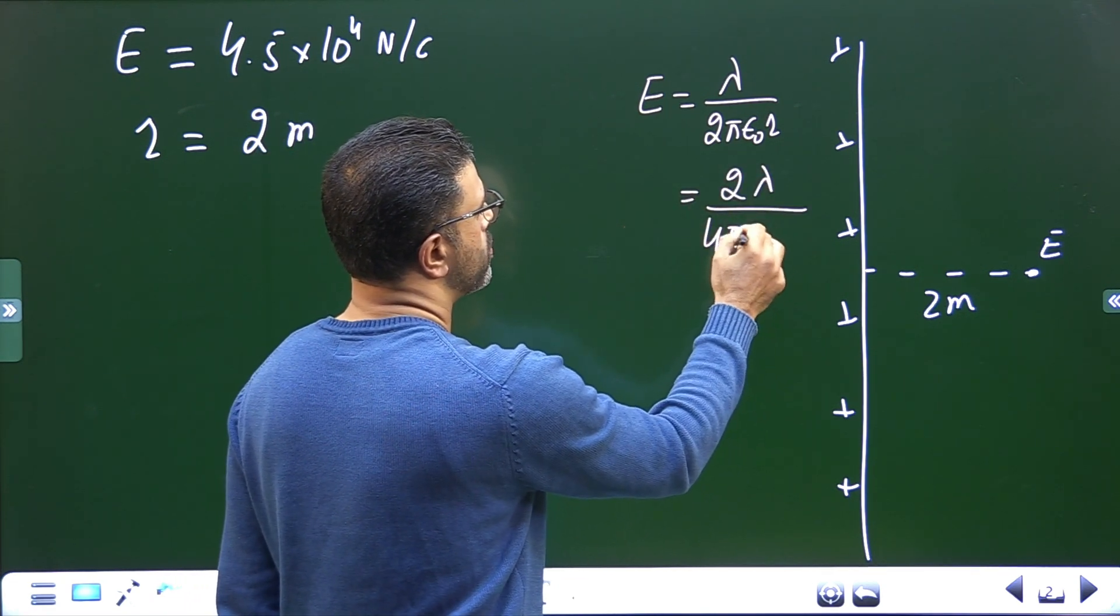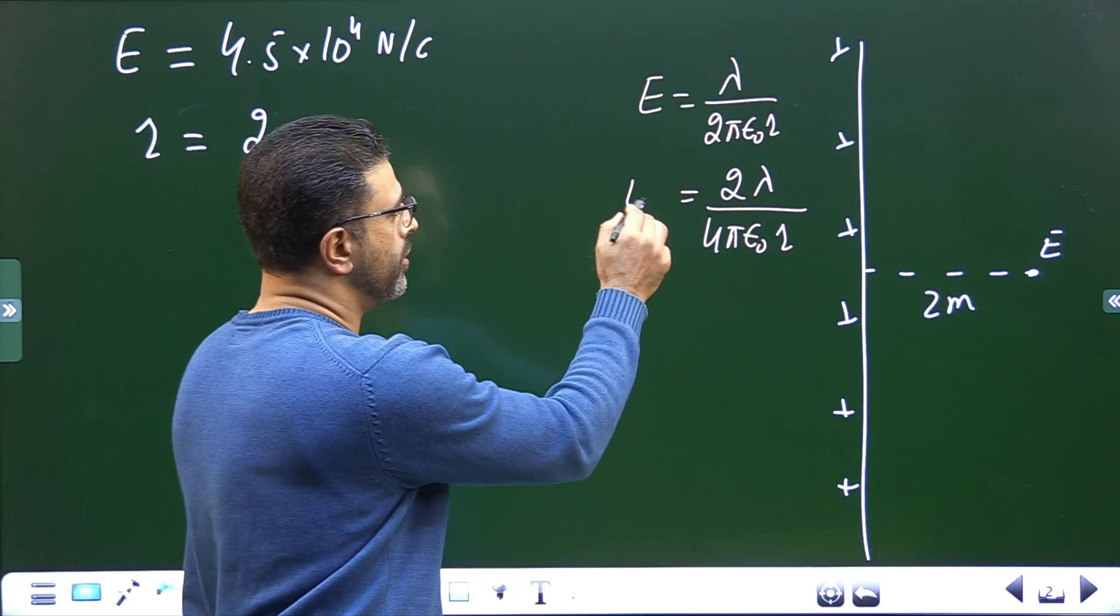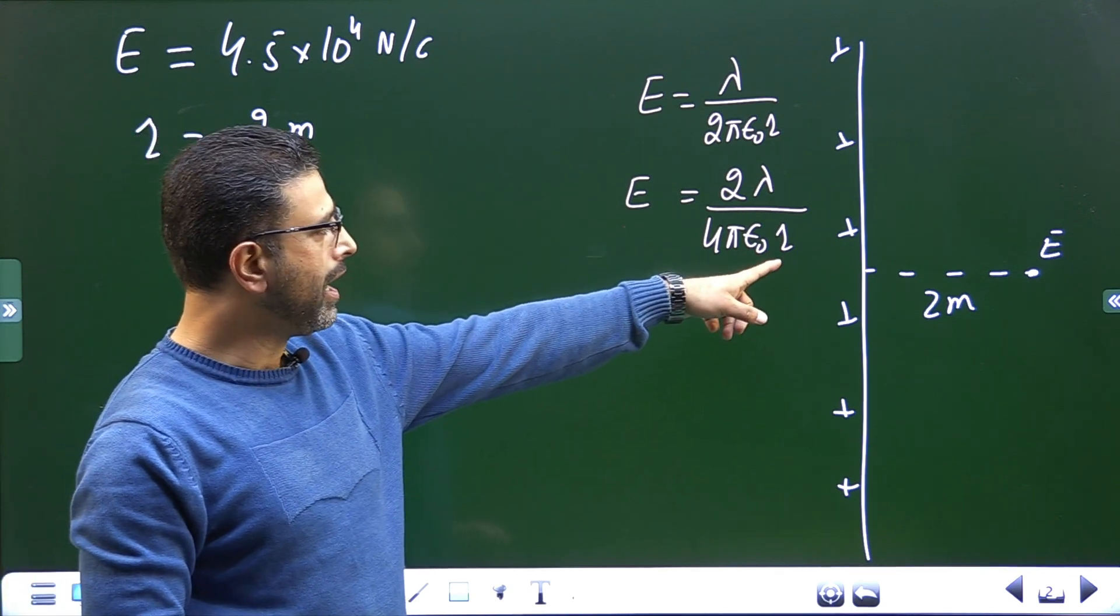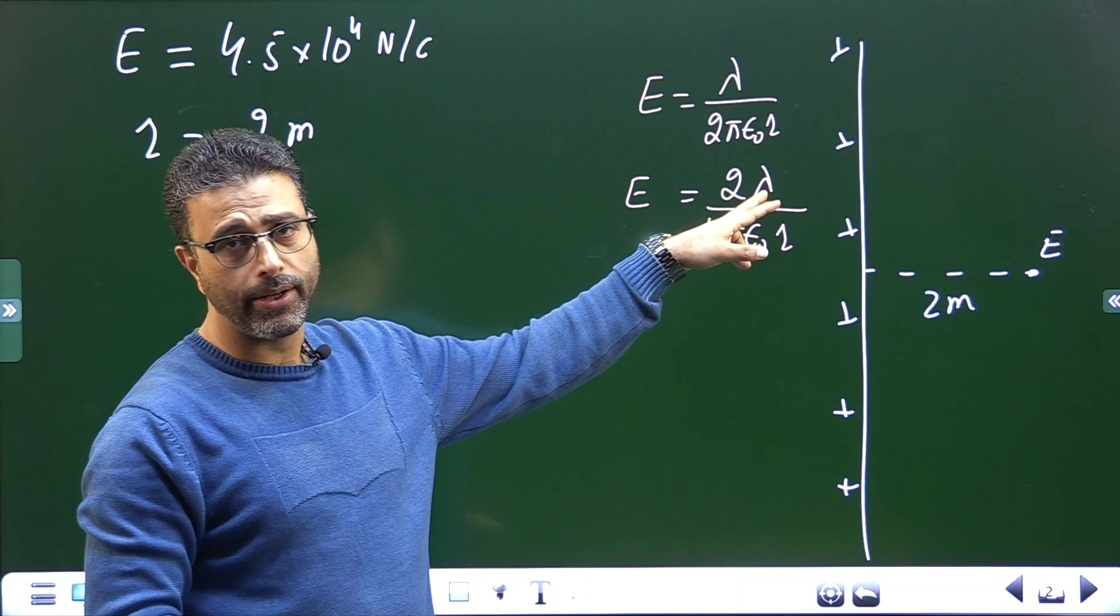So field is given to us. The magnitude of the electric field is given, r is given, 4 pi epsilon 0 we already know, lambda we have to find out. So it's easy, we can just rearrange this equation.